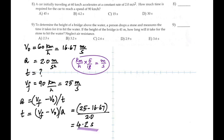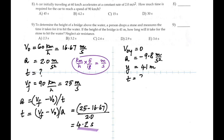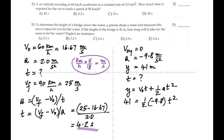Number 9: to determine the height of a bridge above the water, a person drops a stone. When you see the word 'drop,' the initial velocity is zero. The height is 41 m. V₀Y = 0, acceleration = −9.8 m/s², vertical displacement = 41 m. Use the equation Y = V₀T + ½AT². The first term becomes zero. Substitute in and you get the time as 2.9 seconds.